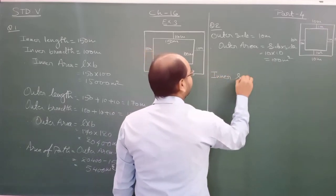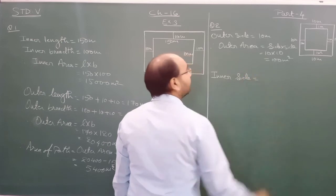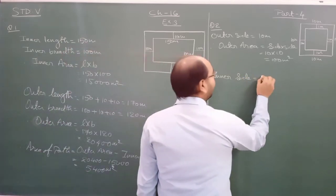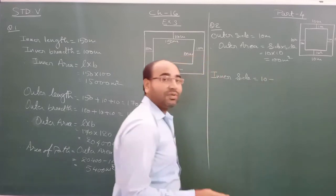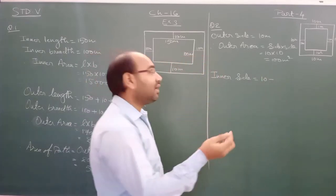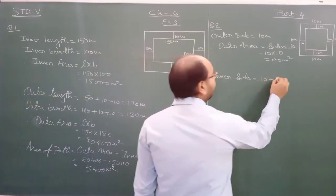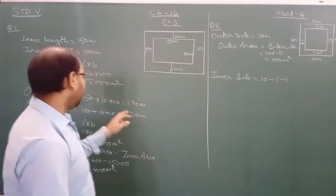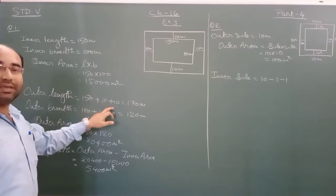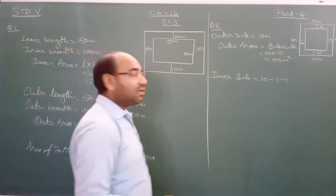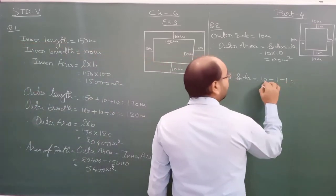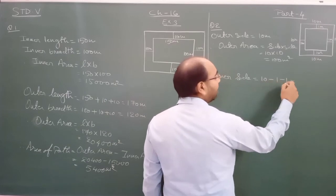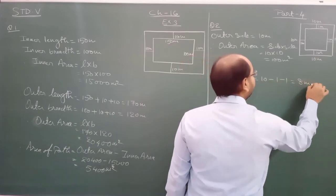Now for the inner side: a square has 4 equal sides. The outer side is 10. Since the path is 1 meter from each side, we subtract 1 meter twice — once from each side. So inner side equals 10 minus 1 minus 1, which gives 8 meter.